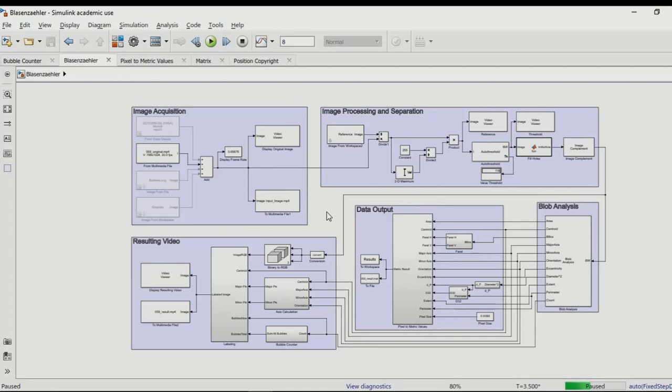Okay, so now let's take a look at our Simulink model. It is divided into five different areas and I'm going to explain every area one by one.